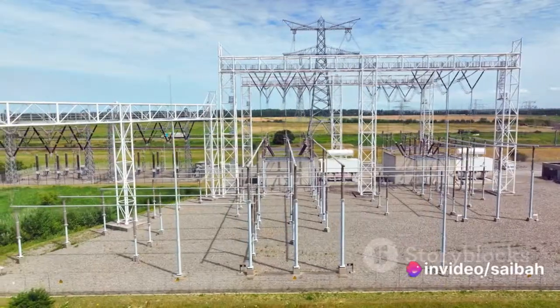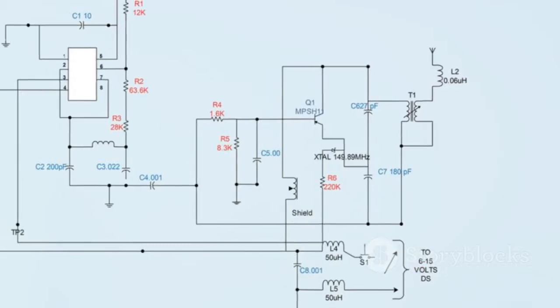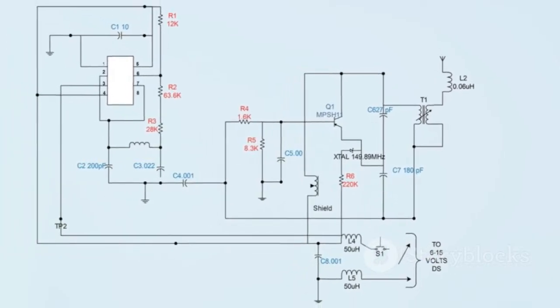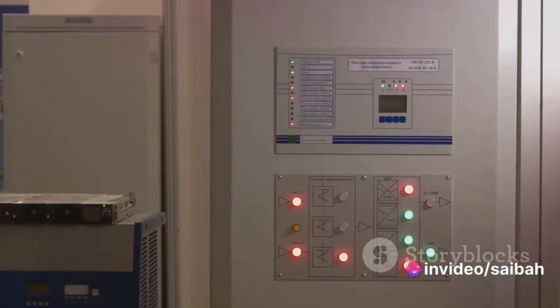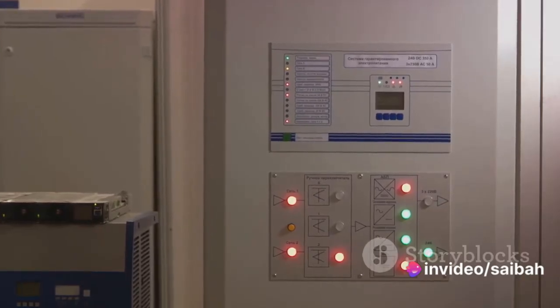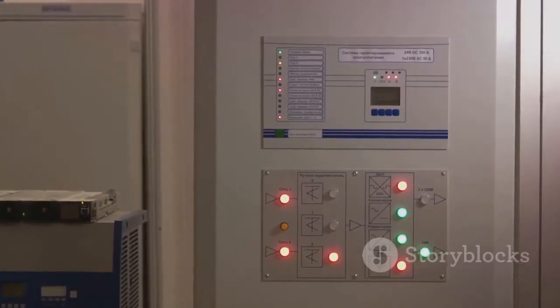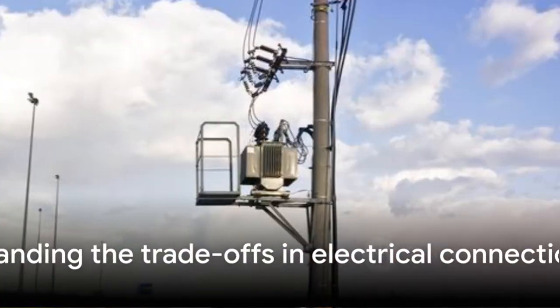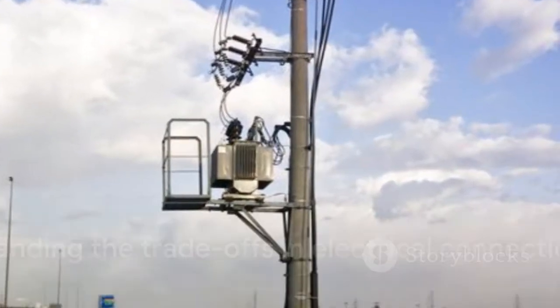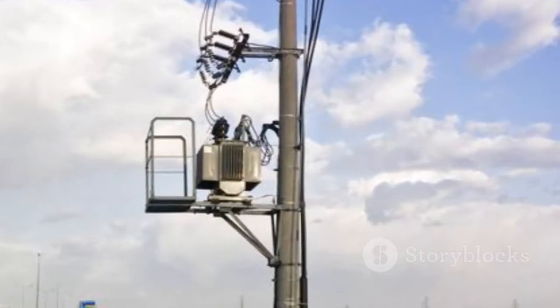So, star and delta — two sides of the same coin, each with its own strengths and drawbacks. Star connections, with their lower voltage and higher current, are safer and offer voltage stability. Delta connections, with their higher voltage and lower current, provide robust load sharing capabilities. As we can see, each connection type has its own pros and cons depending on the specific application.